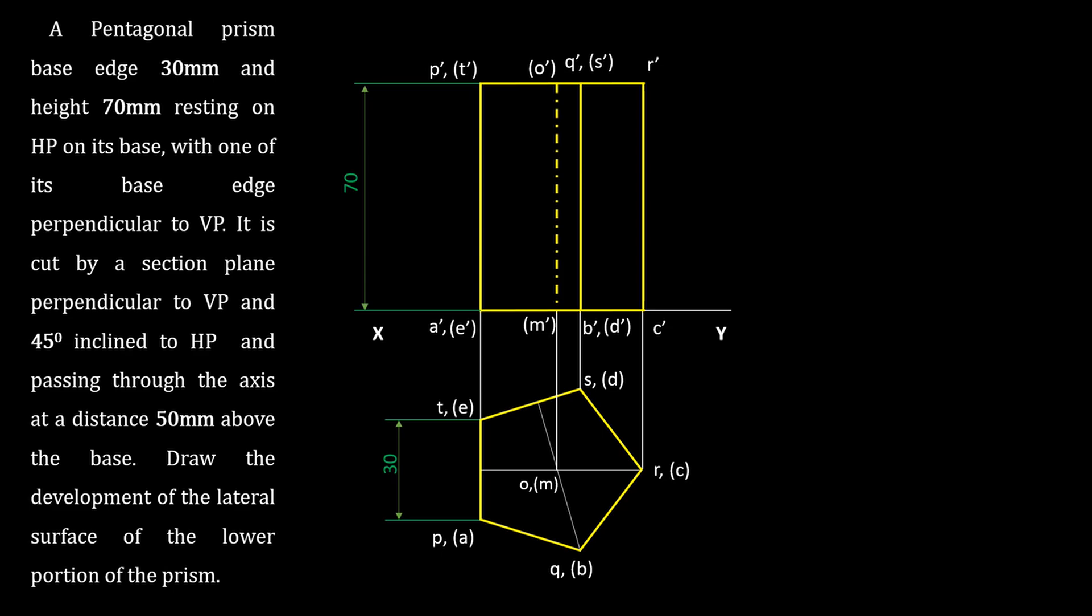Let's locate the section plane. Section plane is 45 degree inclined to HP. We can see the section plane in front view. Section plane passing through the axis at a distance 50mm above the base. Mark 45 degree on front view. Draw the section plane as chain thin line with thick ends and arrowhead. And mark vertical trace VT on the section plane.